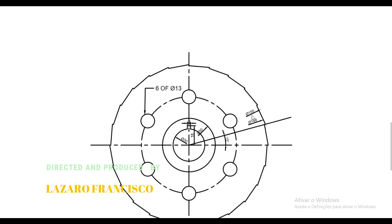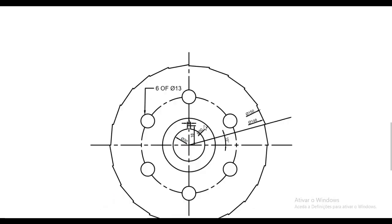Welcome back to this channel. This is AutoCAD for Mechanical Engineering, lesson number 25. In this lesson we'll make practice number nine. Let's go to our drawing and check the dimensions for the disc. We have a distance of 150 and 138. We will also make six holes and one inside. Let's start making our drawing.